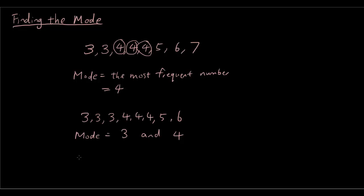You could also have no mode. For example, 3, 4, 5, 6. In this set of data, there is no mode.